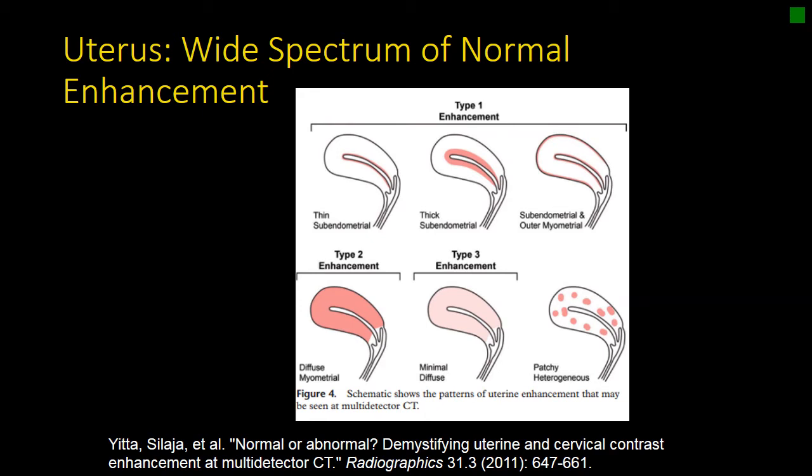It's not clear why these different enhancement patterns exist, but you need to familiarize yourself with the spectrum of normal so that when there is something abnormal, such as a mass or an infection, you can recognize the difference between the variance of normal and an abnormal pattern.